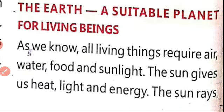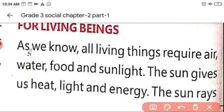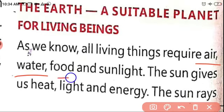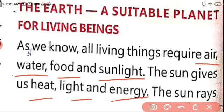What makes the earth a suitable planet for living beings? All living things require air, water, food, and sunlight. Sunlight provides heat, light, and energy. Up to this point is enough for today's session; the remaining topics we will cover in the next class.